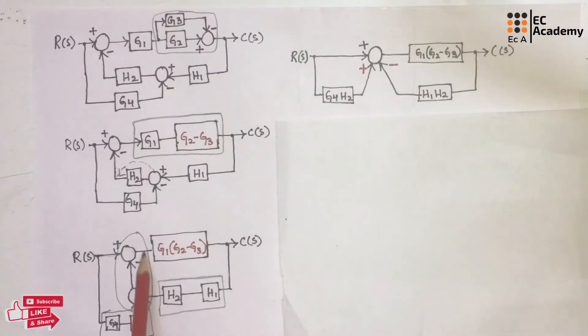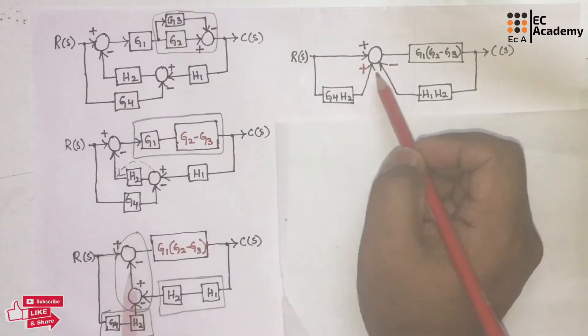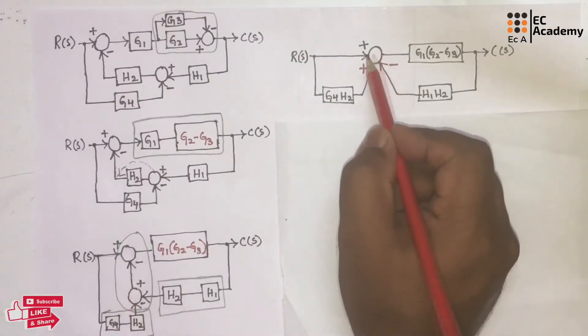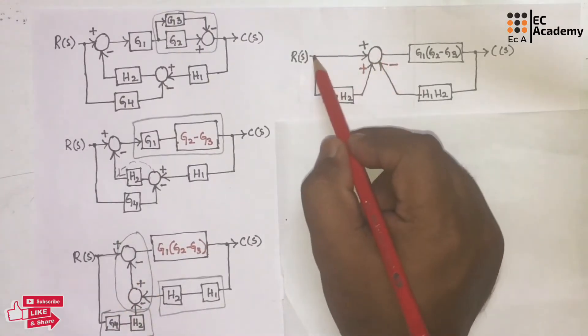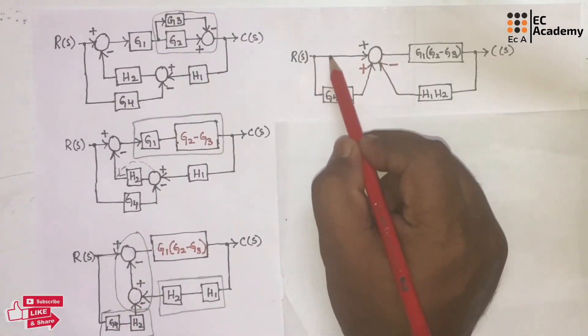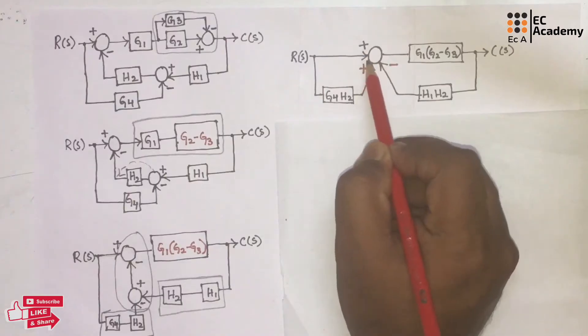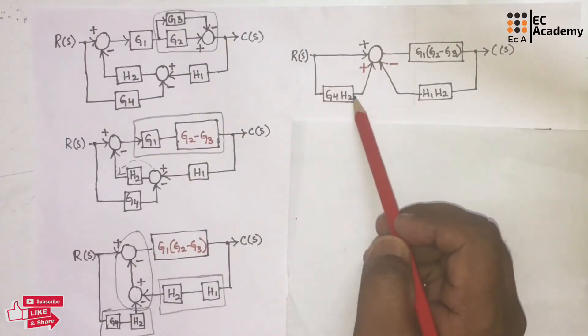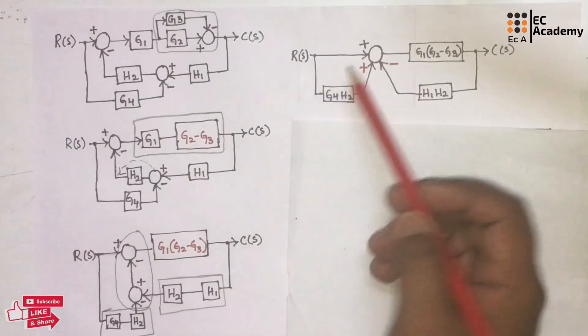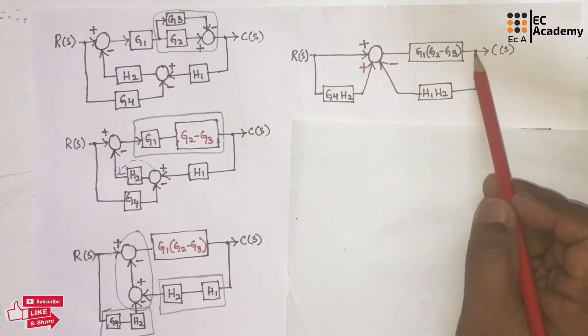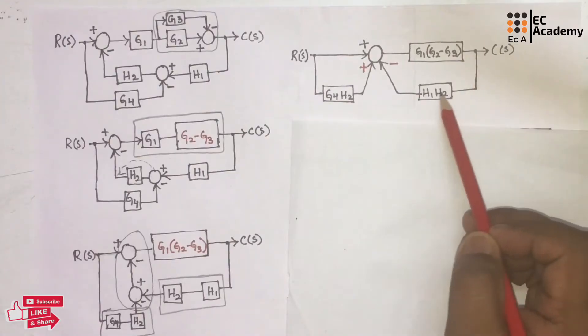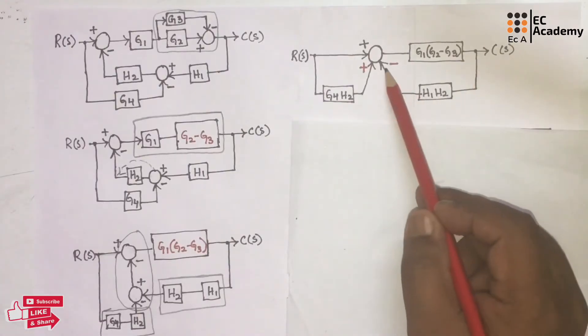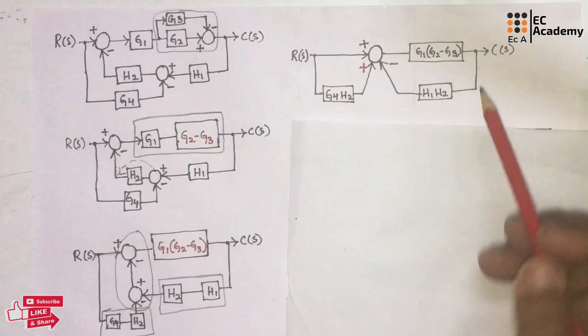After simplifying, we got a summing point with three inputs. The first input is from R(s), the second input is from the feedback path of R(s), and the third input is from the feedback path of C(s).